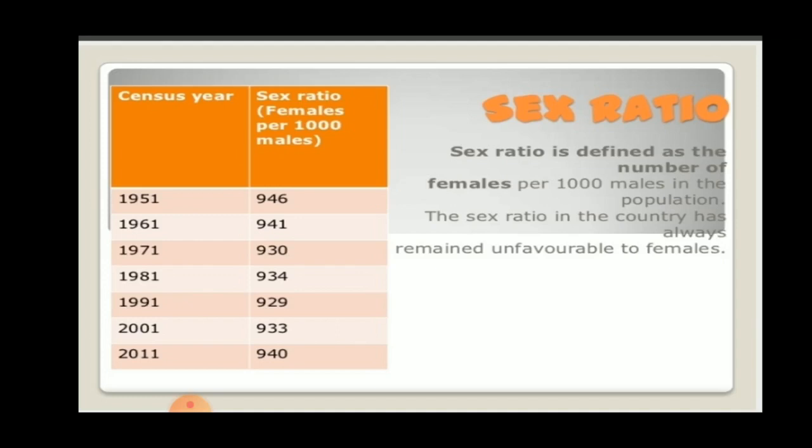Now we discuss the sex ratio. Sex ratio is defined as the number of females per thousand males in the population. The sex ratio in the country has always remained unfavorable to females and has been reducing consistently since 1951.